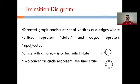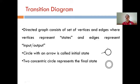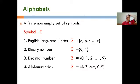This diagram is called the transition diagram. A transition diagram is a directed graph that consists of a set of vertices and a set of edges, where vertices represent the states and edges represent the input or output. Two important symbols: a simple circle with an arrow represents the initial state, and a state represented by two concentric circles is considered the final state.